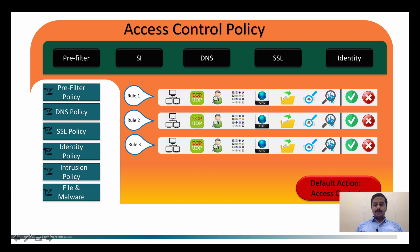When traffic comes in, it passes through the pre-filter policy, security intelligence, DNS policy, SSL, and identity before passing through the user-defined access rules. In the upcoming videos I'm going to talk about each of these components such as pre-filter policy, security intelligence, and DNS. But in this video we'll cover how it works at a high level.